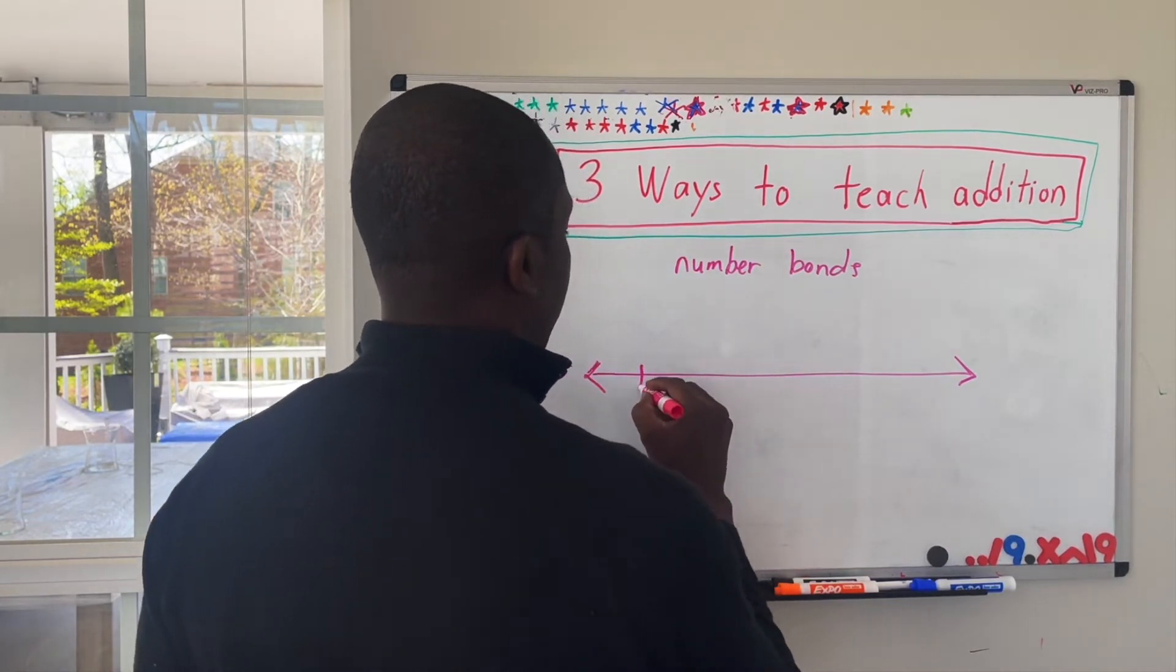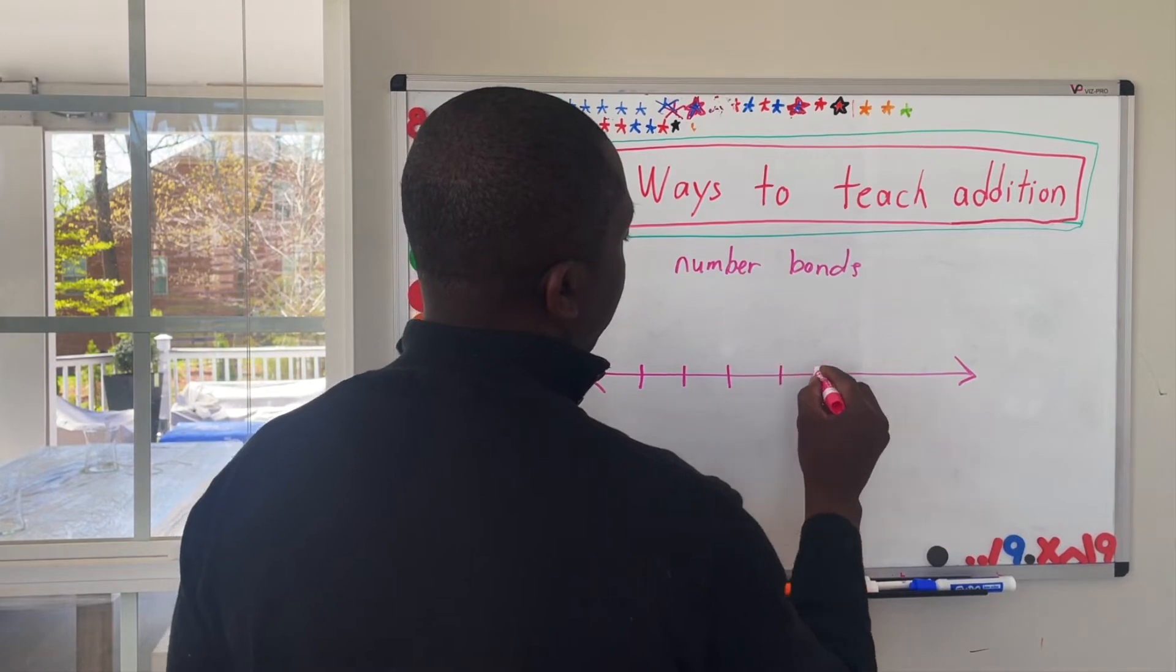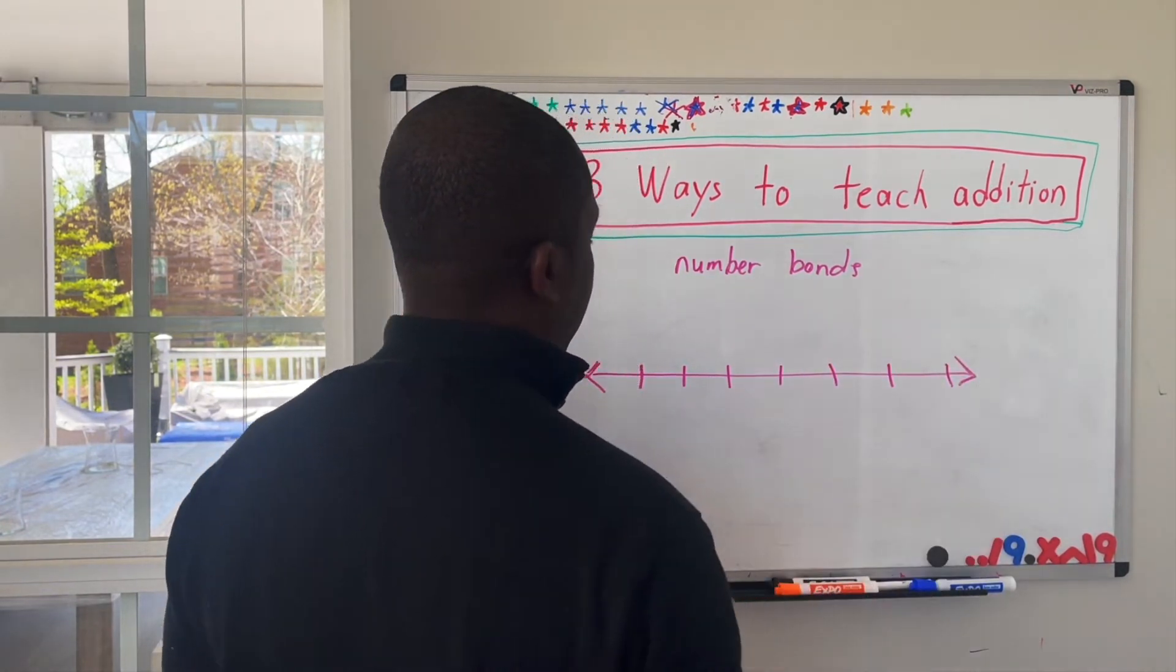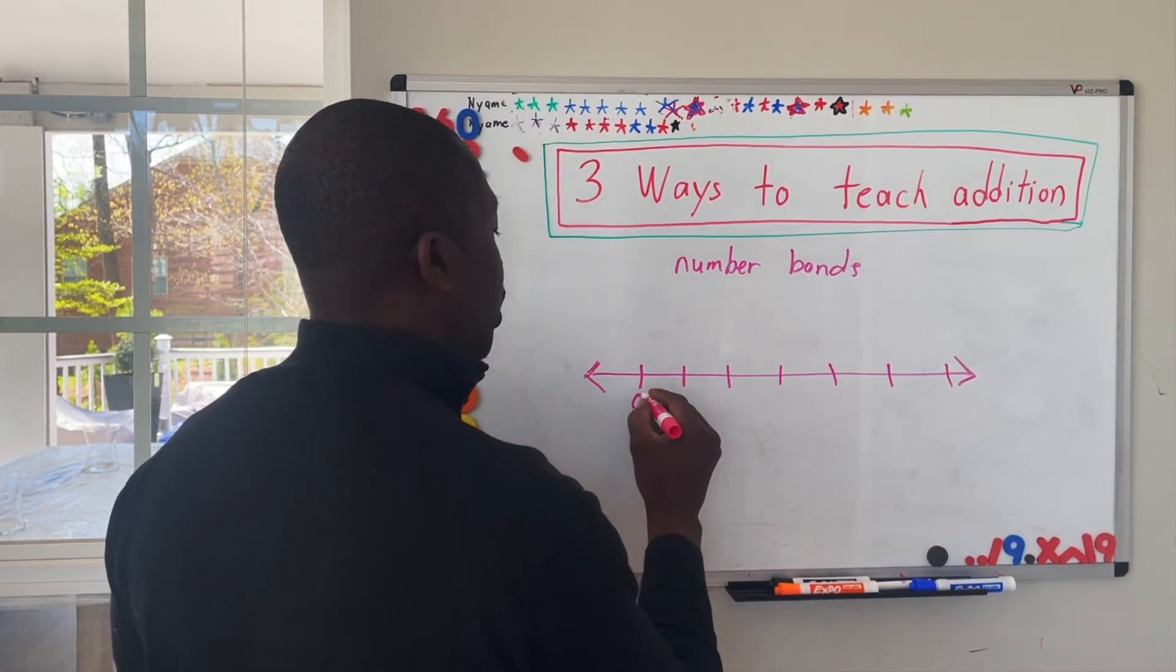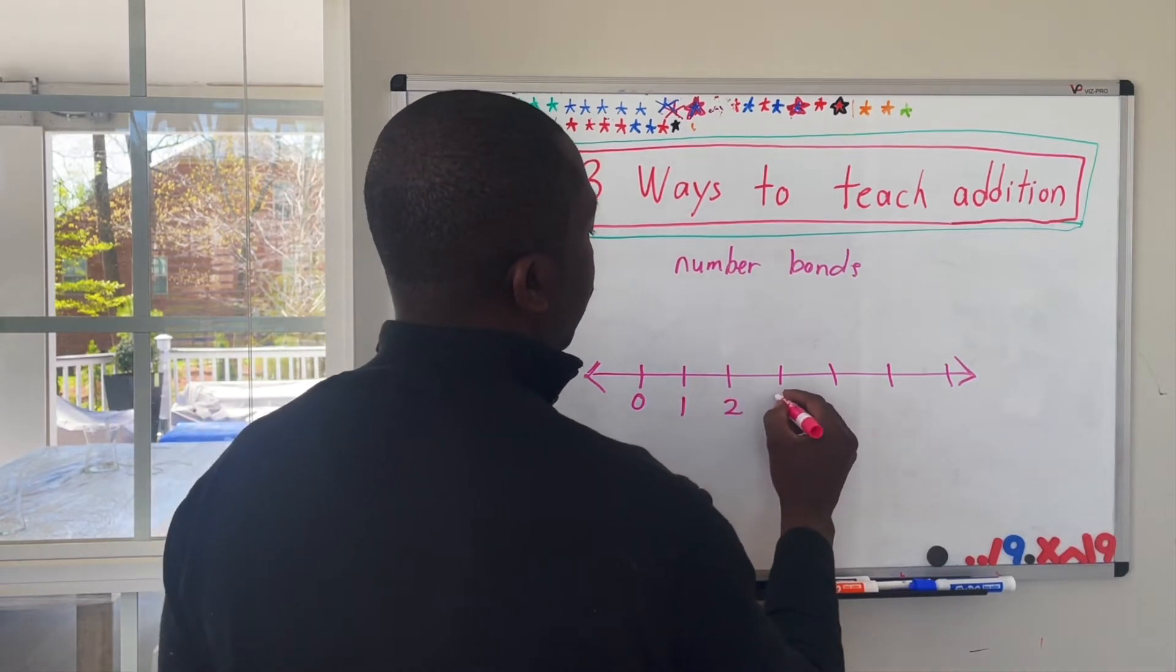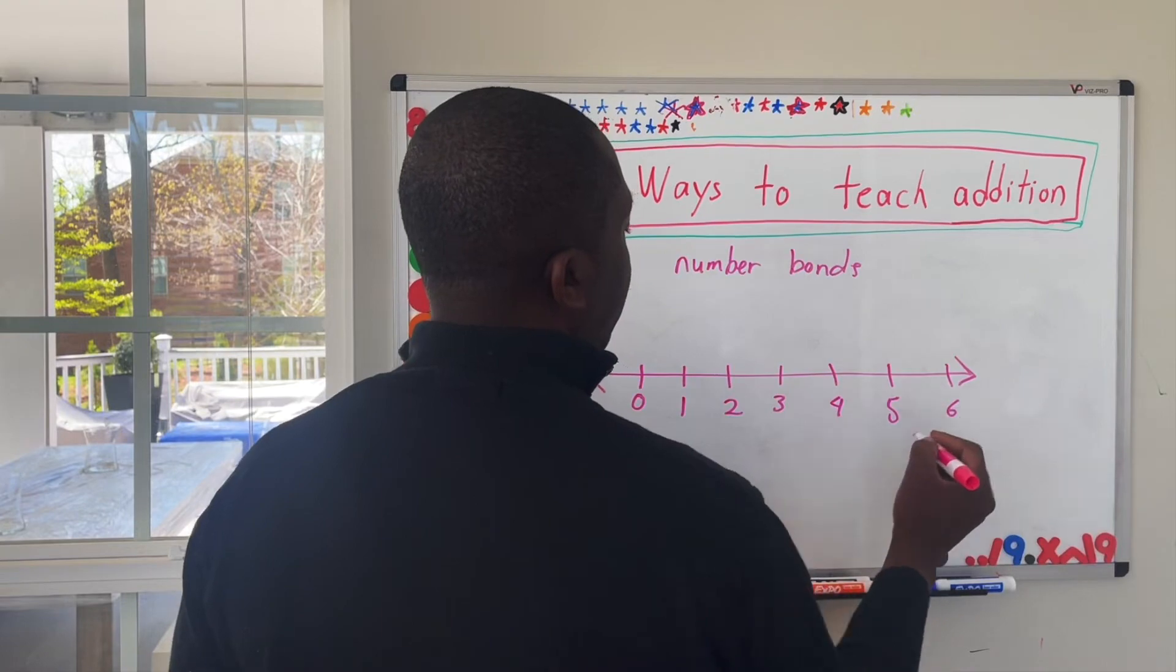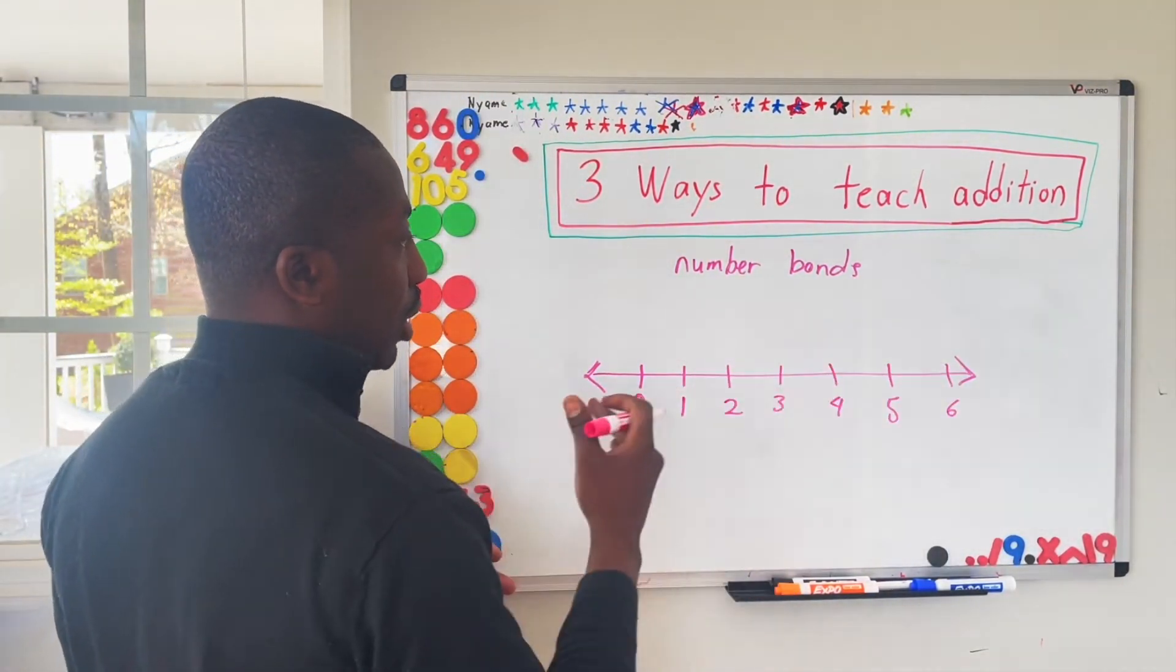So in the number line method, a child learns that the numbers are organized in a coordinate. So let's say this is one, two, three, four, five, six, and let's make this a seven. And then we'll write this down. Actually, let's start here with zero. Zero, one, two, three, four, five, six. So if the child, this is a number line.